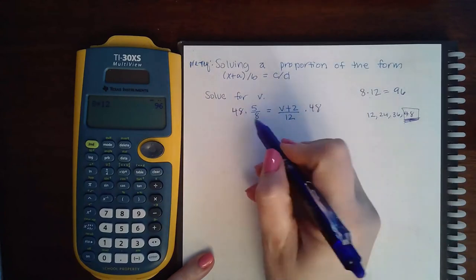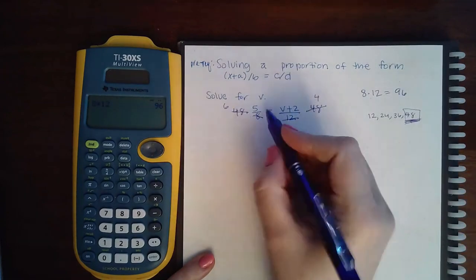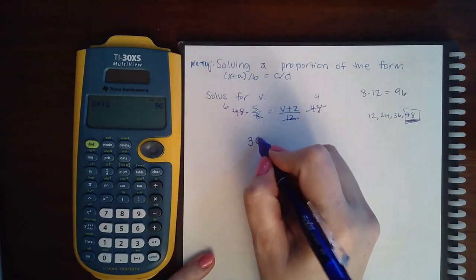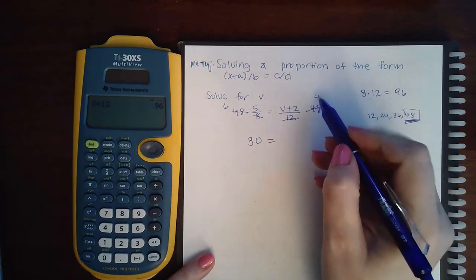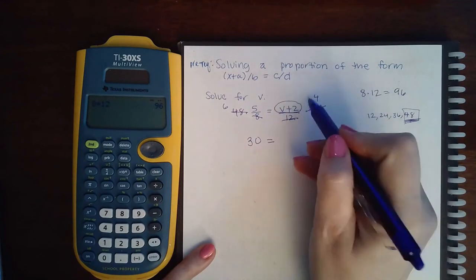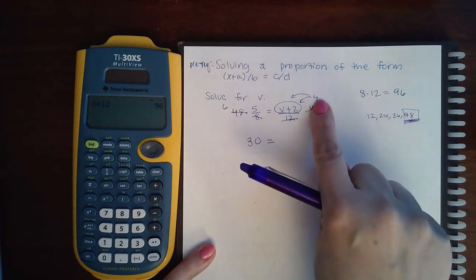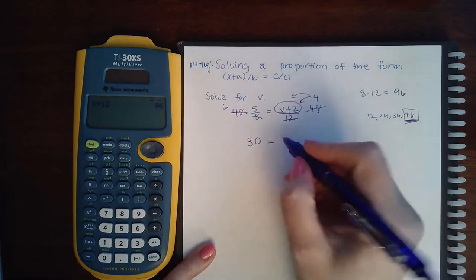Here I get 8 into 48 which is 6, 12 into 48 which is 4. So what I'm left with is 6 times 5 which is 30, but I'm left with 4 times this entire numerator, which means I actually have to distribute that 4 since it's one term times two terms. So I end up with 4v + 8.